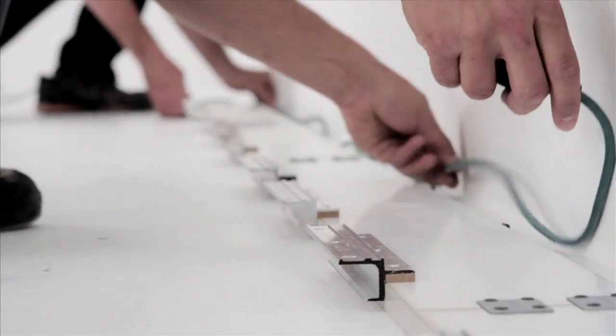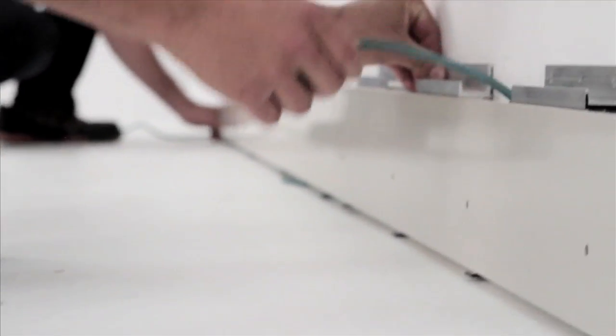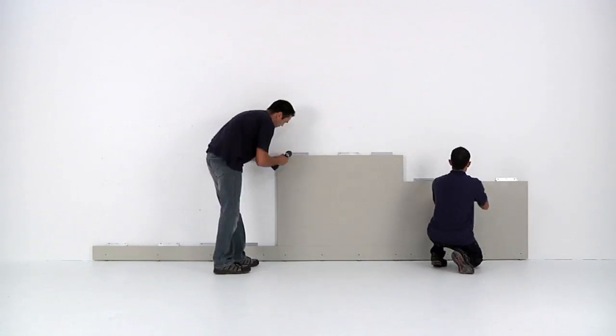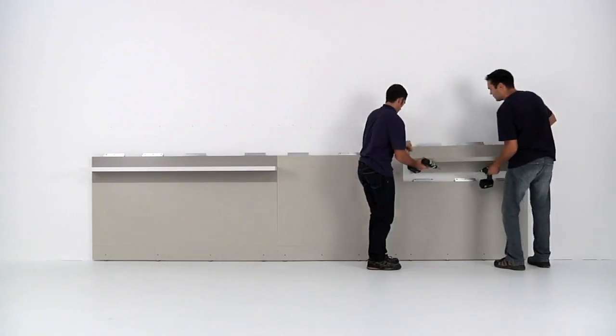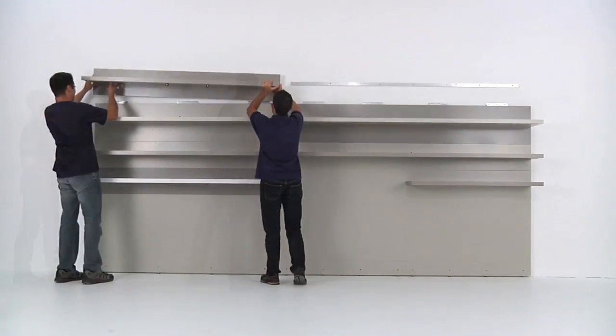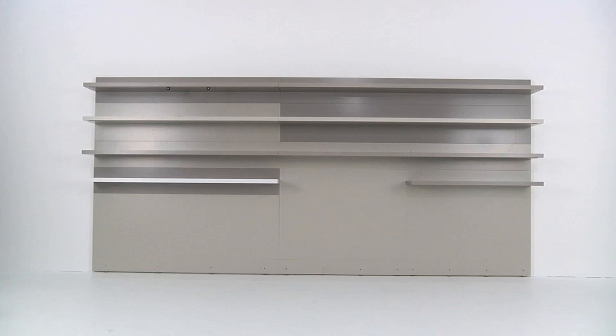Before you begin, discuss the matter of cabling with the customer and try to anticipate possible problems to avoid any nasty surprises once the unit has been assembled. The assembly procedure for this composition is broadly similar to the one previously described. What makes this composition different, however, is the sliding doors and system of floor level chests.